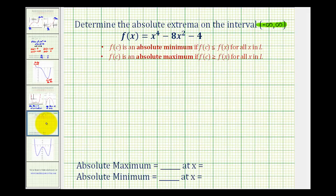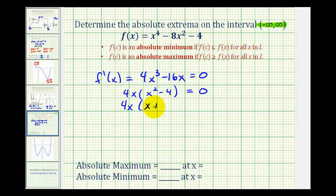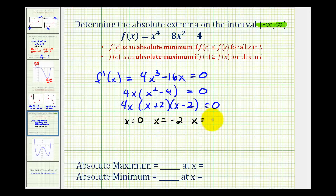Now let's look at our example. We'll start by determining the critical numbers of the given function, so we find the first derivative, which is four x cubed minus sixteen x. The derivative of the constant four is zero, and this derivative exists for all real values of x. Setting it equal to zero and factoring out four x, we get four x times the quantity x squared minus four, which factors again. So we have three critical numbers: x equals zero, x equals negative two, and x equals positive two.